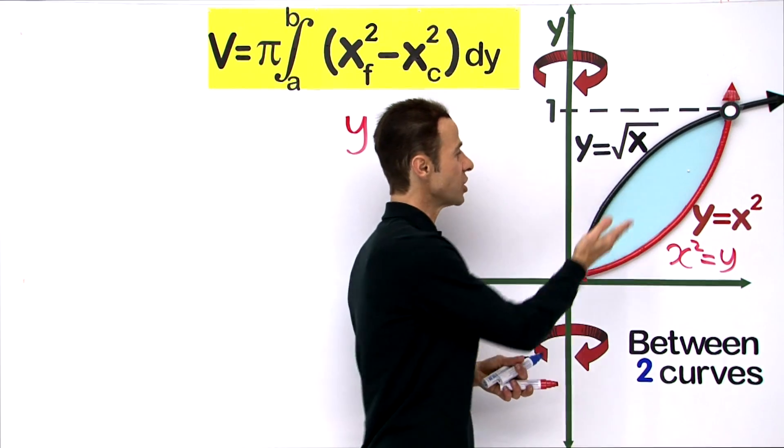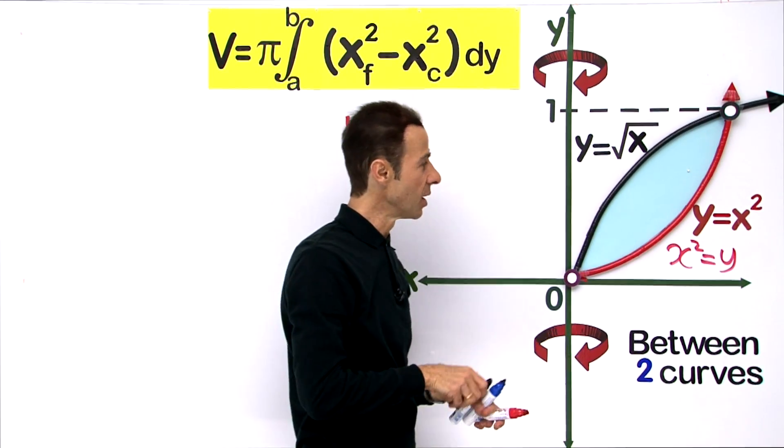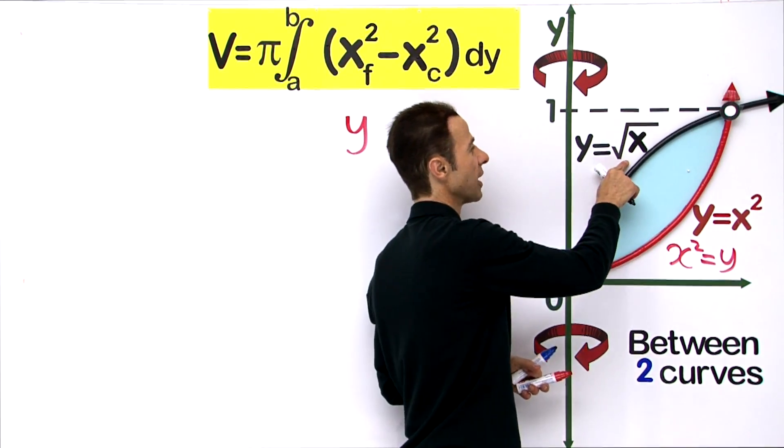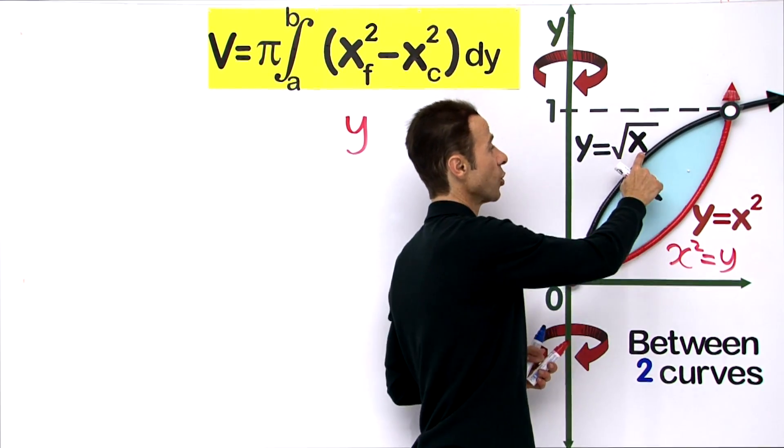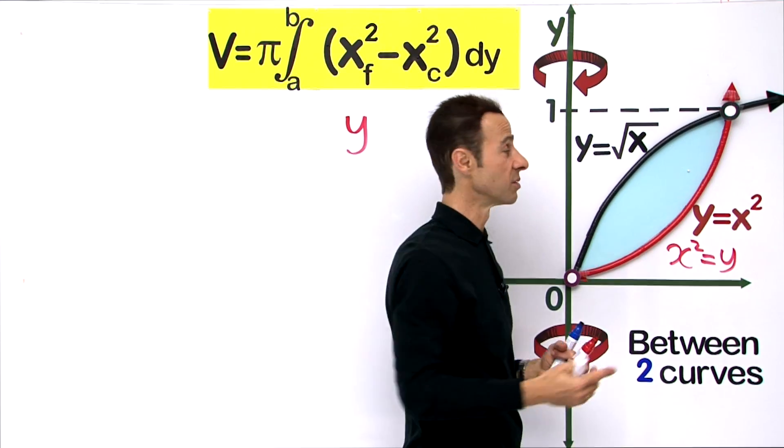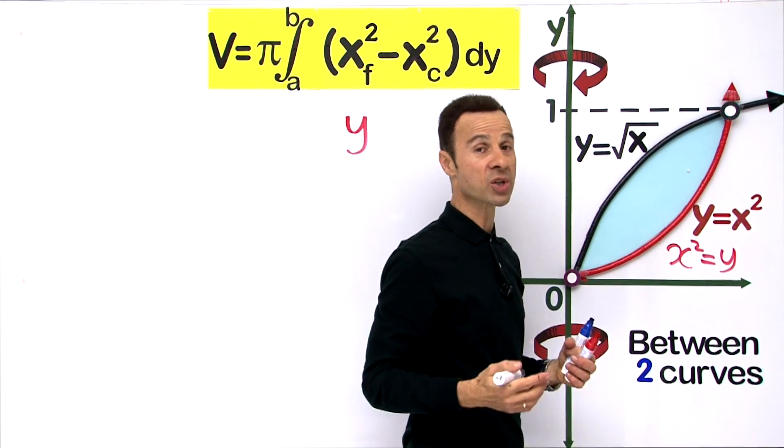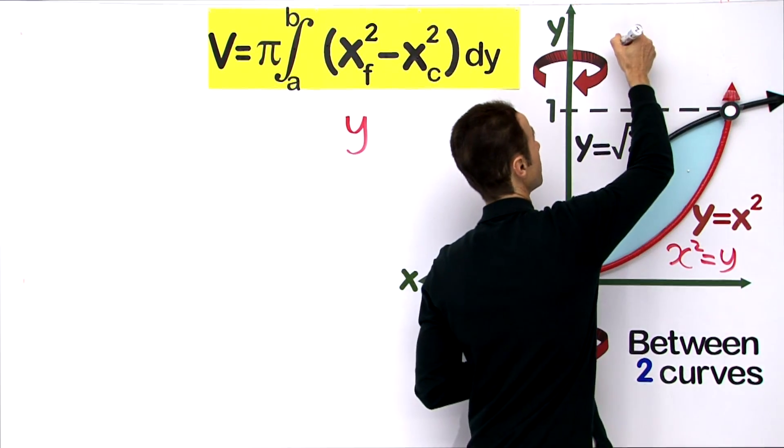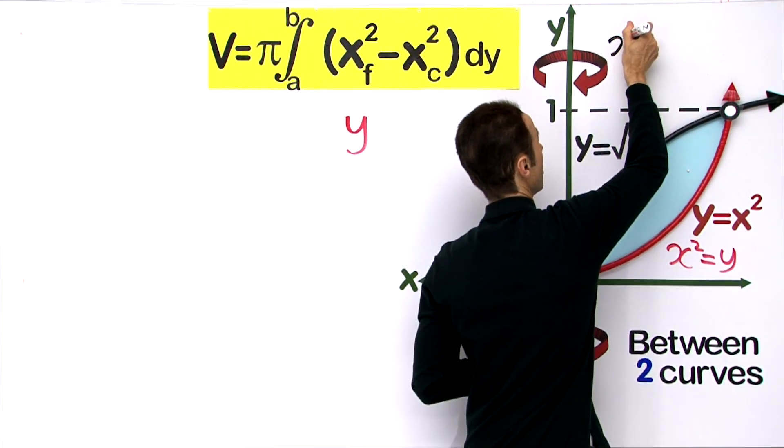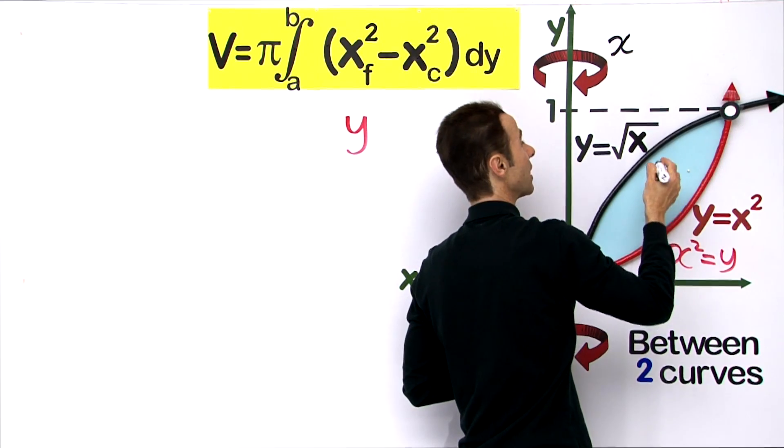For the other curve, y equals the square root of x - what would happen if I square both sides? Squaring the square root of x makes it x, and squaring y makes it y squared.